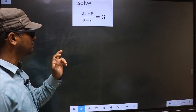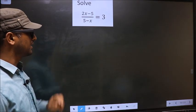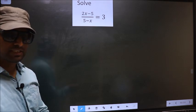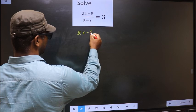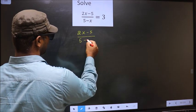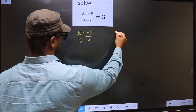Solve 2x minus 5 over 5 minus x equals 3. First, we are given 2x minus 5 over 5 minus x equals 3.